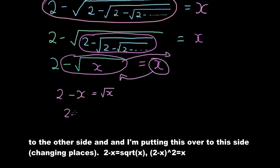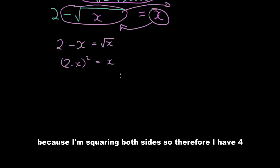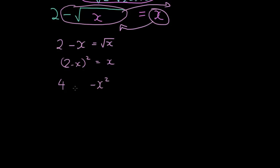2 minus x squared equals x. I'm squaring both sides. So therefore I have 4... I have 2 minus x times 2 minus x. So I have negative 2x minus 2x, negative 4x plus x squared equals x.